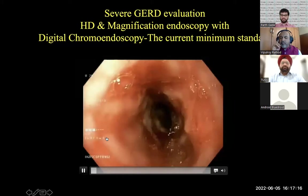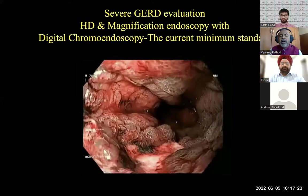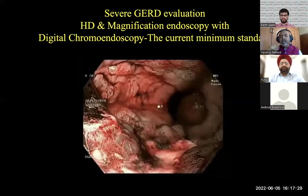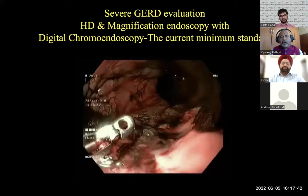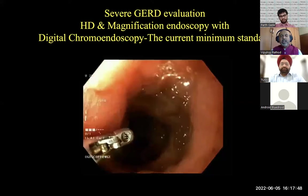What really changed for all of us is magnification endoscopy. The reason it is important is that it allows you to pick up the smallest possible bleeding lesion in hidden areas of complex situations. I'm giving a representation of how digital chromoendoscopy and magnification endoscopy will assist us greatly in the diagnosis of certain problems.